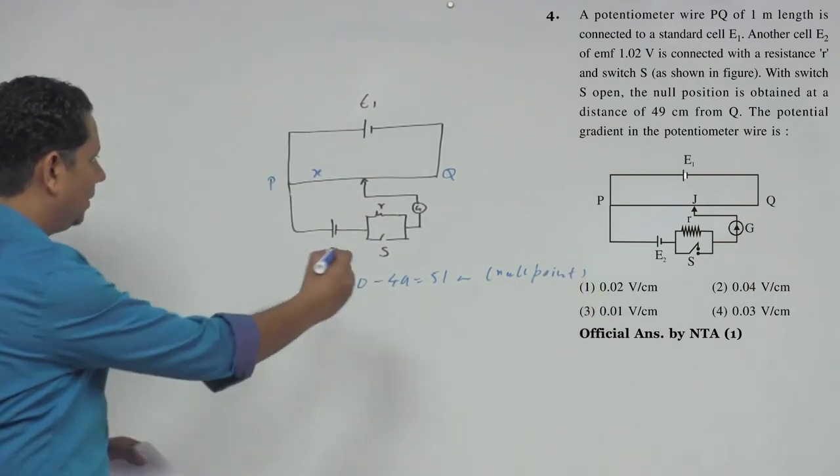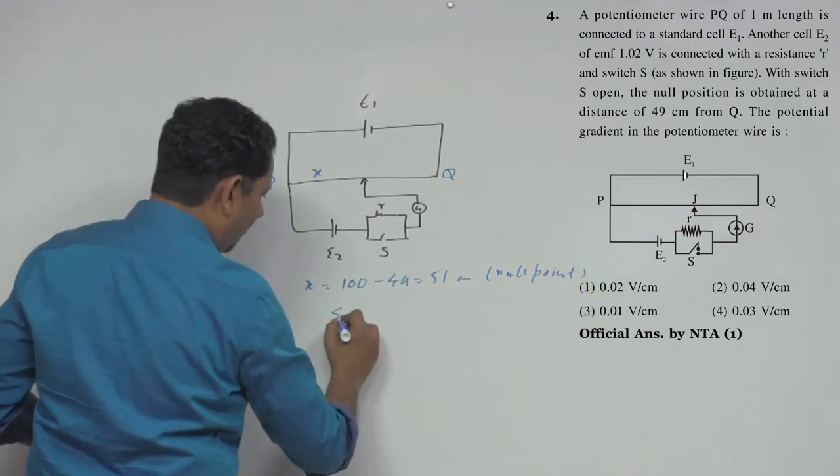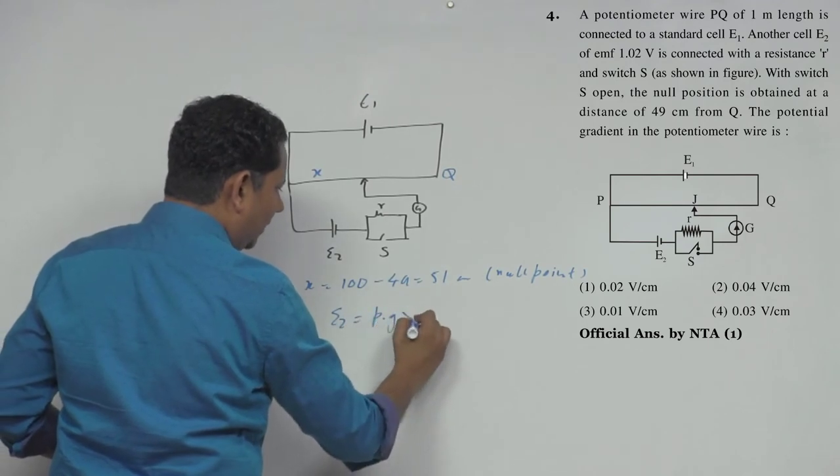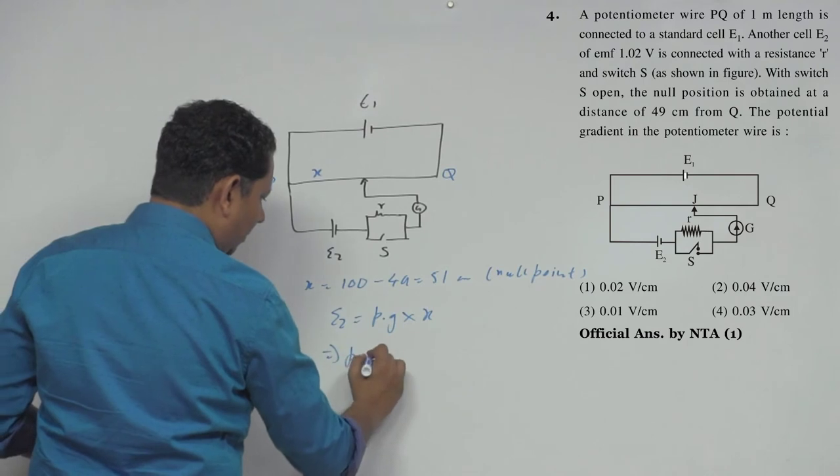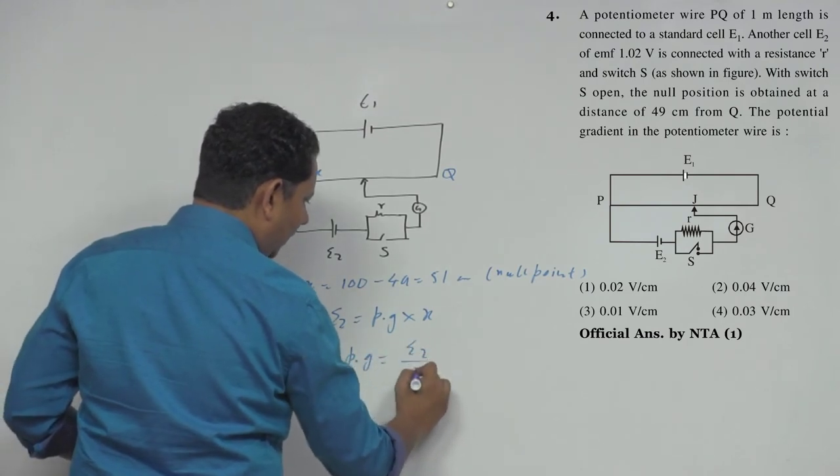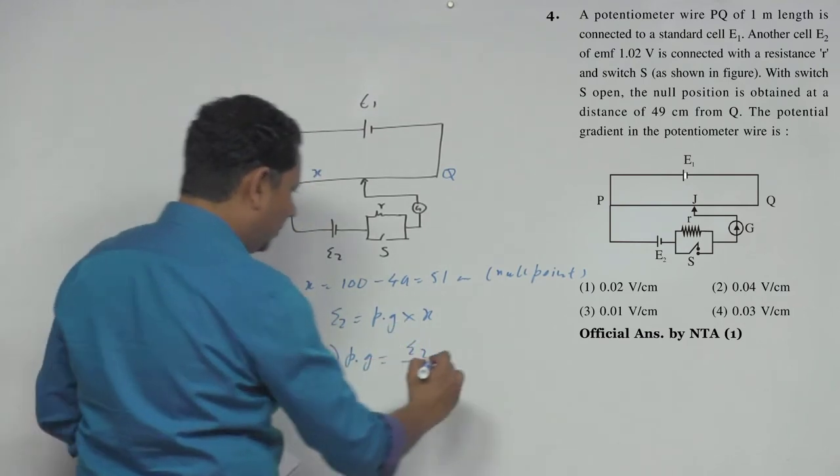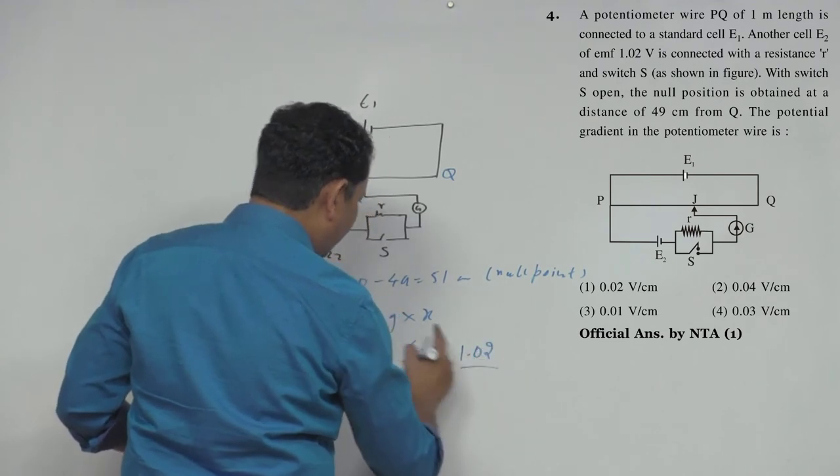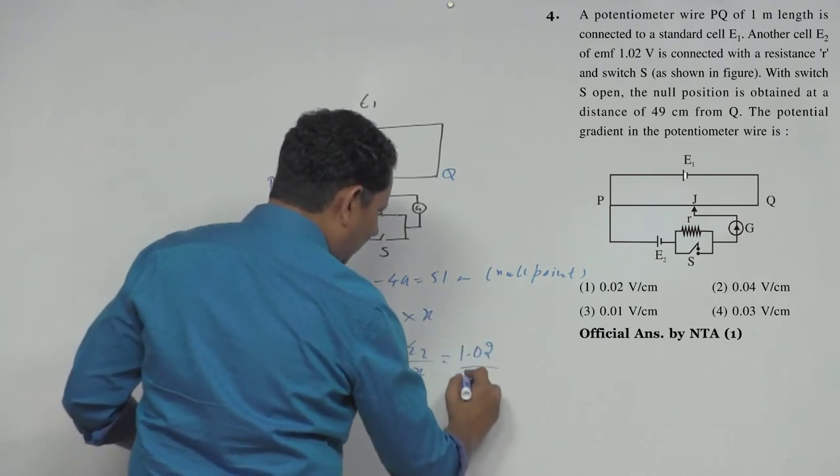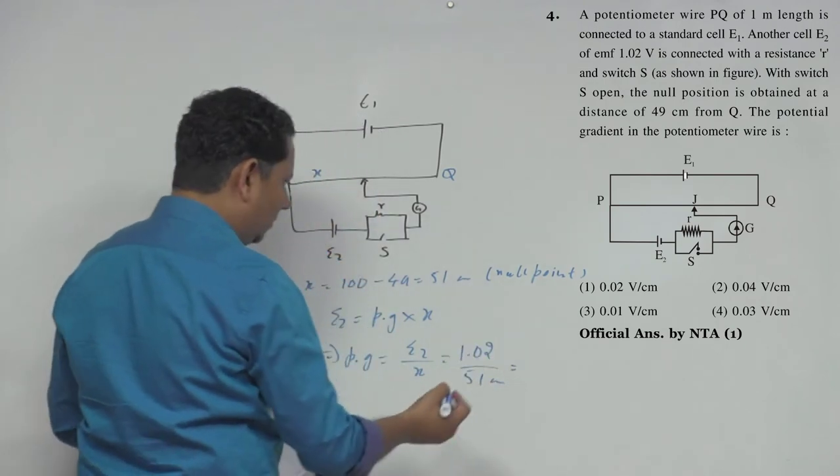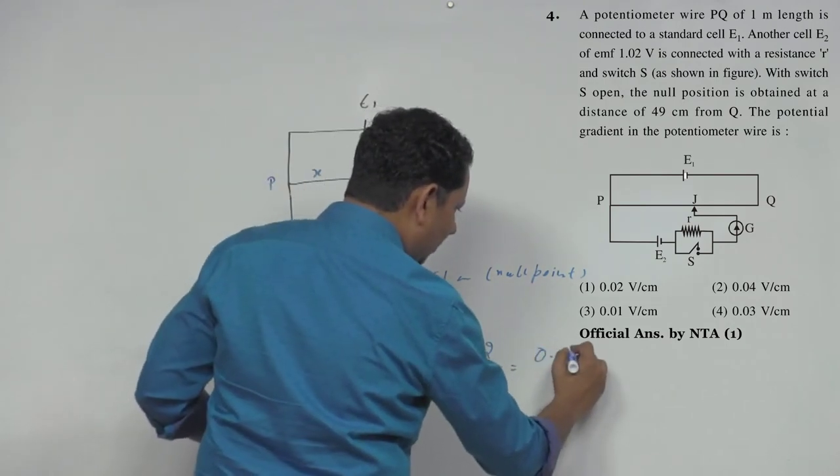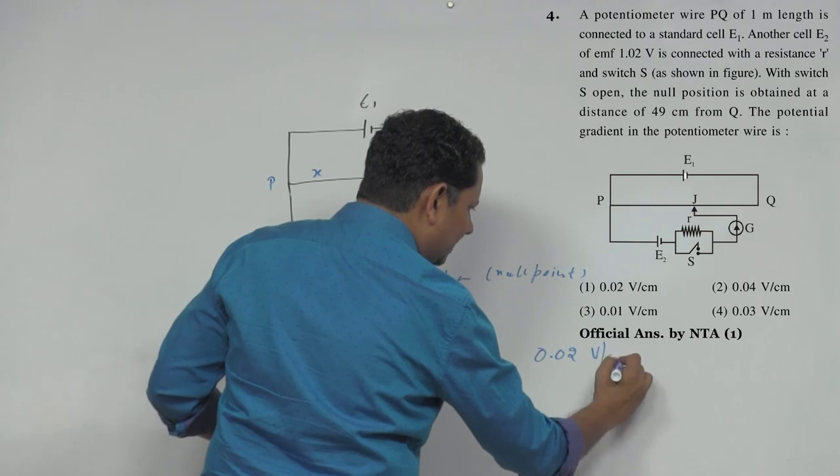Now you know that your EMF E2, we write it as potential gradient multiplied by the length x. This implies the potential gradient is E2 divided by x. The value of E2 is 1.02 divided by your length, that is 51 centimeter. Keep in mind to divide in centimeters, so this will be equal to 0.02 volt per centimeter.